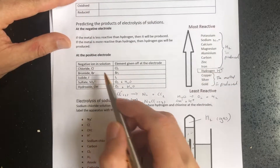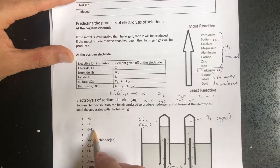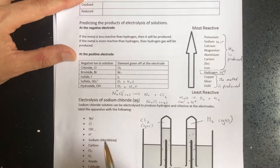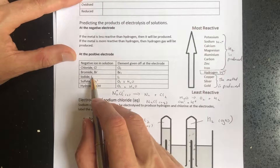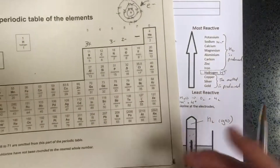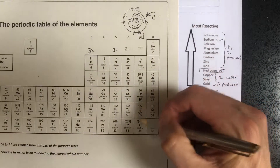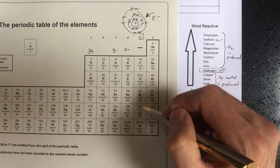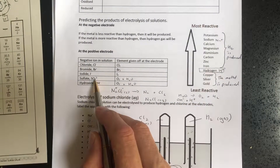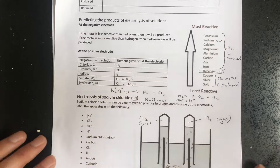The rule for anions is different. In sodium chloride aqueous we've got chloride ions and hydroxide ions — both are anions. If the ion contains only one atom, then that is produced. The ones that contain only one atom are all halogens — Group 7 of the periodic table: fluorine, chlorine, bromine, iodine, astatine. If we start with one of these halogen ions, that is produced at the expense of the hydroxide. If we start with a different, more complex ion like sulfate, then the sulfate is not produced. In that case, the hydroxide is produced and that makes oxygen and water.